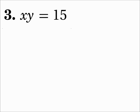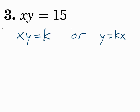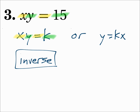Number 3: x times y equals 15. Is this in the form xy equals k, or y equals kx? Well, xy equals 15 has x times y, which looks like inverse variation. We have x times y equals k, and since k is a number, k equals 15. This is definitely inverse variation.